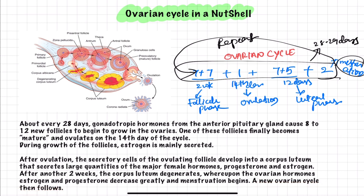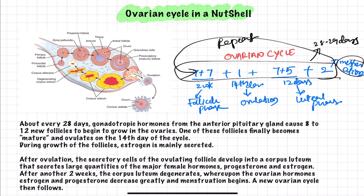With menstruation, a new ovarian cycle then follows. This is how all these things take place in the ovarian cycle — this is the nutshell. You need to have a clear basic concept to proceed. With this, we end today's class. Thank you for watching and keep supporting. Have a nice day, goodbye.